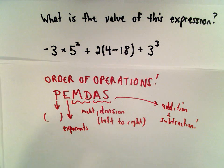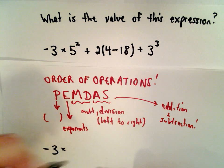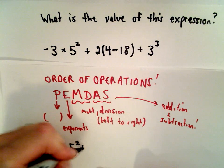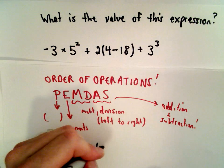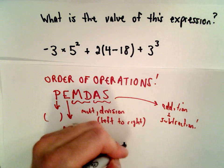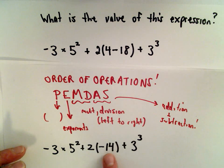The first thing is let's simplify the stuff in the parentheses. We've got negative 3 multiplied by 5 squared plus 2. So 4 minus 18, that's going to be negative 14, plus 3 to the third. There's really nothing left to simplify inside the parentheses.